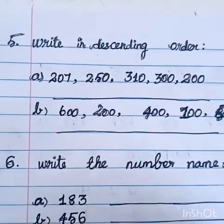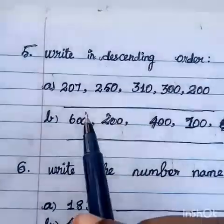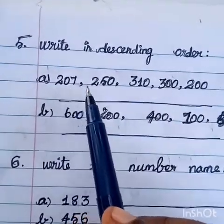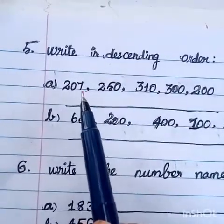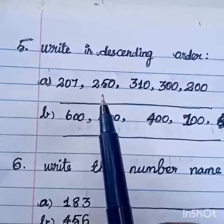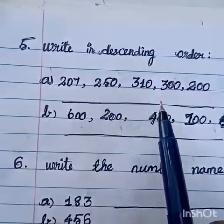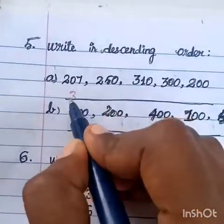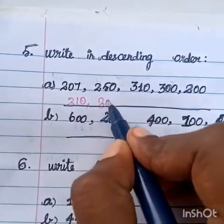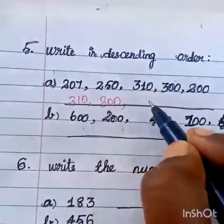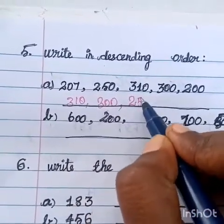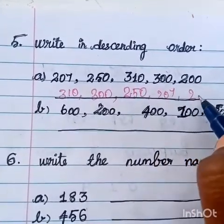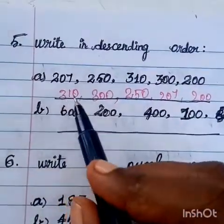Question number 5, write in descending order. Descending order is the biggest number to smallest number. Question a, the biggest number is 310, then 300, then 250, then 207, last one 200. Because 200 is the smallest number.